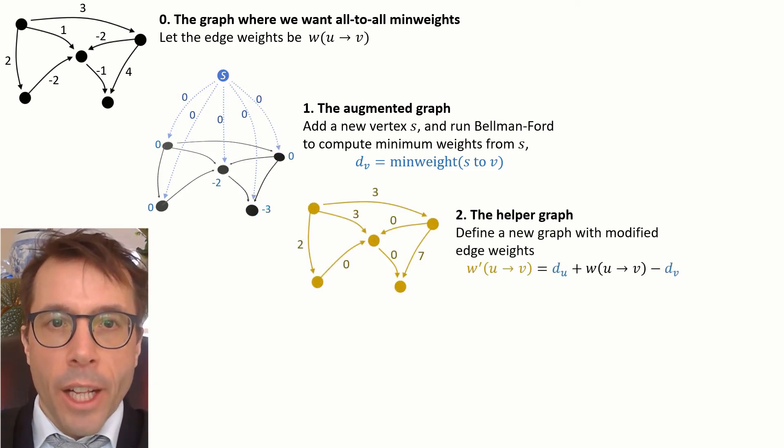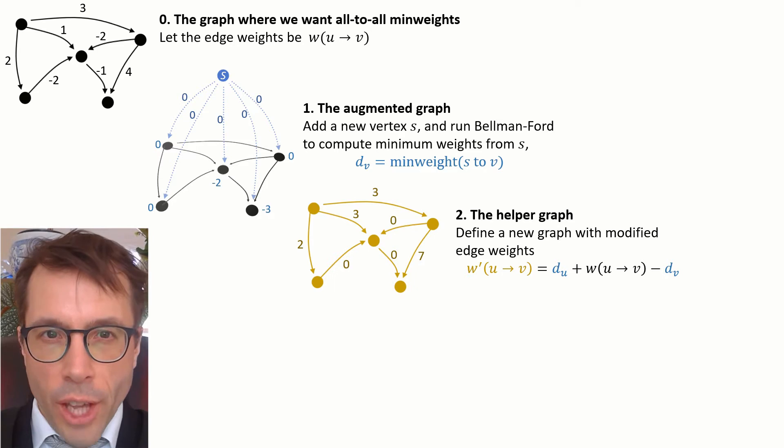Next step, define a helper graph. This helper graph will have exactly the same vertices and edges as the original graph but its edge weights are different. They come from this formula here.